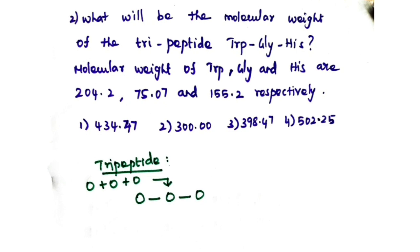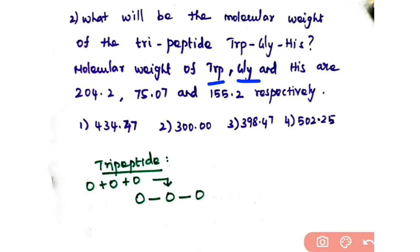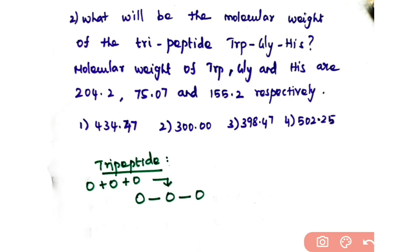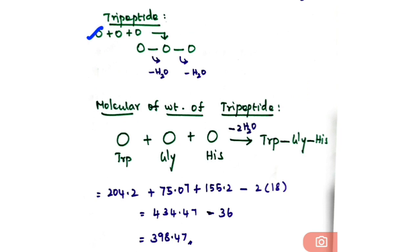The next problem: what will be the molecular weight of a tripeptide? Tryptophan, glycine, and histidine have molecular weights of 204.2, 75.07, and 155.2 daltons respectively. A tripeptide has three amino acids linked by two peptide bonds, so there will be removal of two water molecules — one for each peptide bond formation.